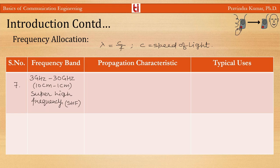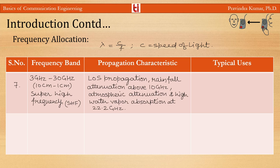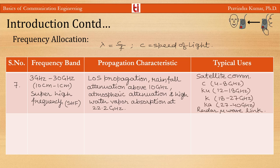The band 3–30 GHz (10 cm–1 cm) is the Super High Frequency (SHF) band. It also requires line-of-sight propagation. Rainfall attenuation occurs above 10 GHz, and atmospheric attenuation and high water vapor absorption occur at 22.2 GHz. SHF is used for satellite communication, radar, and microwave links. In satellite communication, the C-band is 4–8 GHz, Ku-band is 12–18 GHz, K-band is 18–27 GHz, and Ka-band is 27–40 GHz.